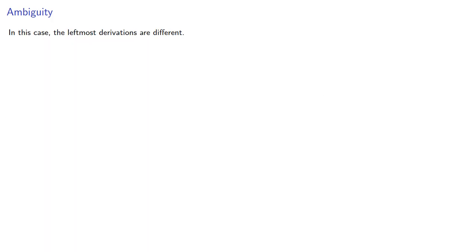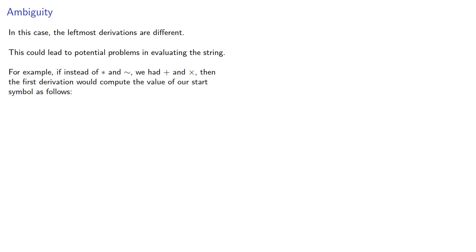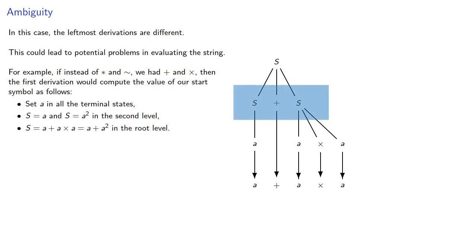In this case, the leftmost derivations are different, and this could lead to potential problems when evaluating the string. For example, if instead of * and ∼, we have + and ×, then the first derivation would compute the value as follows: We'll set a in all terminal states, S is a² in the second level, and S is a + a² in the root level.